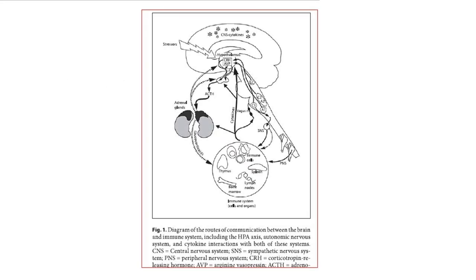This is a figure that describes how these three systems interact with each other. The hypothalamus-pituitary-adrenal axis has been shown here — this is the hypothalamus, the adrenal gland, the pituitary gland — and certain organs of the immune system have also been shown. The interactions between the brain, the immune system including the HPA axis, the autonomic nervous system, and cytokine interactions with both of these systems are shown, illustrating how different systems communicate with each other through different feedback mechanisms and networks.